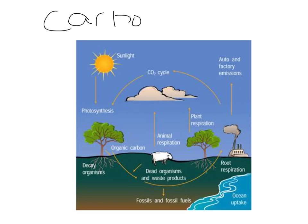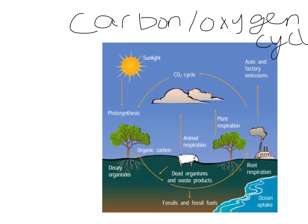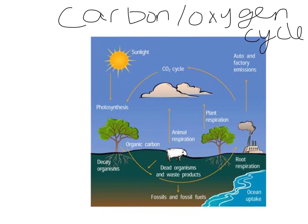The carbon cycle is sometimes called the carbon-oxygen cycle, because like we mentioned, the two usually go hand in hand. If something releases carbon, it usually takes in oxygen. If it takes in oxygen, it usually releases carbon. So let's look at some of the things that can release carbon — that's what we're going to focus on right now.